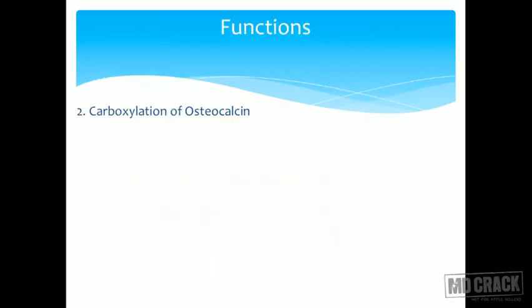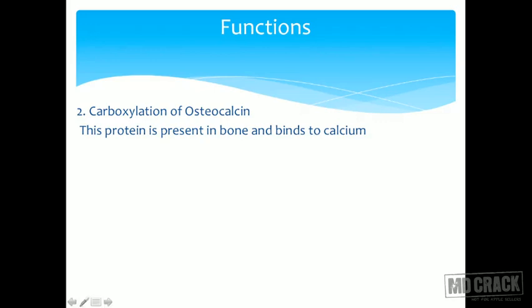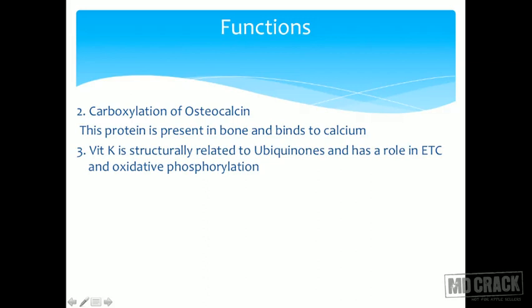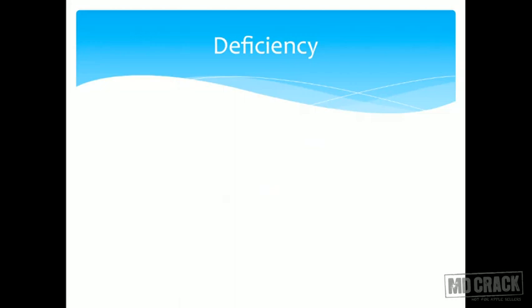Vitamin K also causes carboxylation of an important protein called osteocalcin, present in bones, which binds to calcium — similar to how carboxylation helps calcium binding in clotting. Vitamin K is also structurally related to ubiquinones and has a role in the electron transport chain and oxidative phosphorylation. Because of this structural relationship, dicumerol acts as an uncoupler.